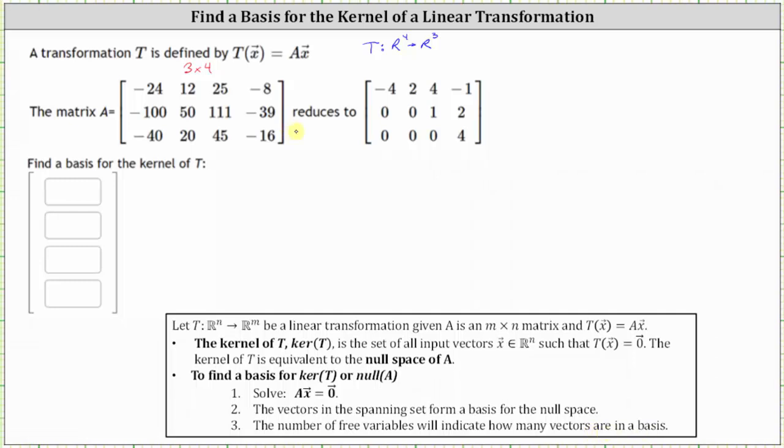So looking at the reduced form of matrix A, notice we have pivots in row one, column one, row two, column three, and row three, column four. And because we're mapping from R4 to R3, we know the input vectors have four components. Let's label the columns x one through x four.